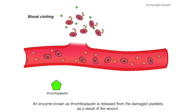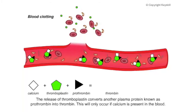An enzyme known as thromboplastin is released from the damaged platelets as a result of the wound. The release of thromboplastin converts another plasma protein known as prothrombin into thrombin.